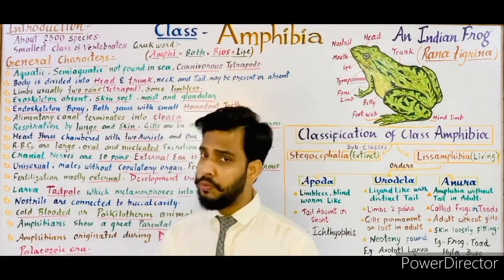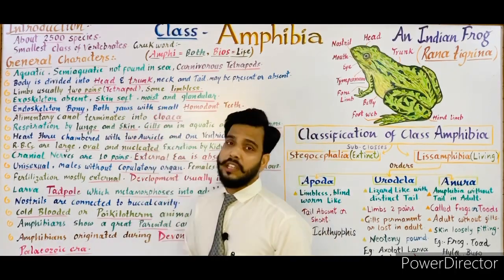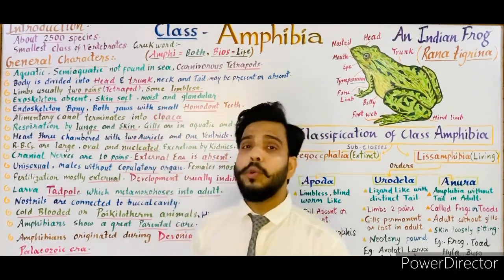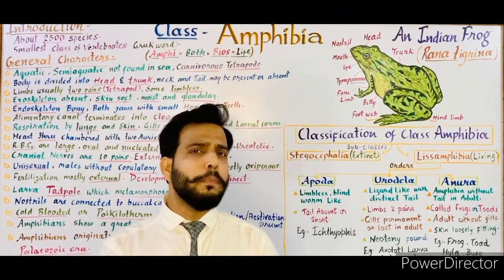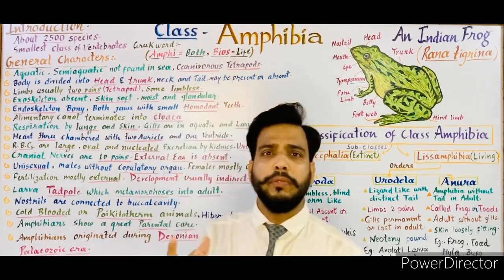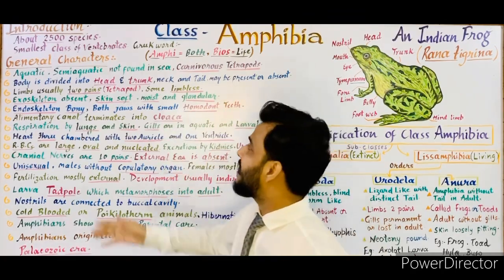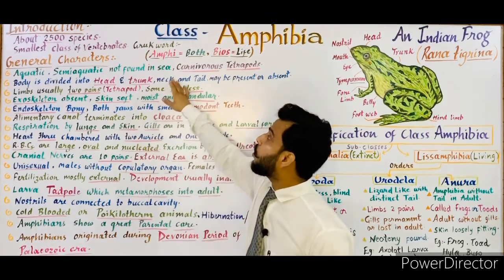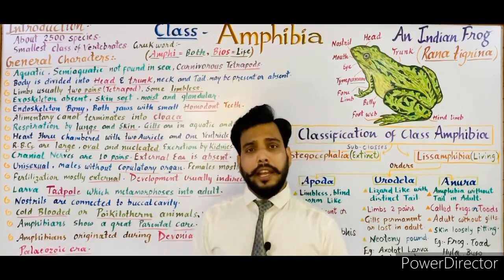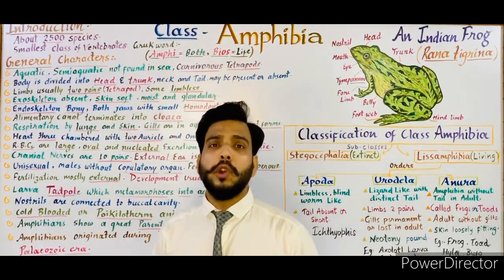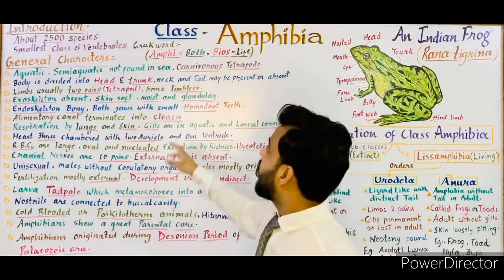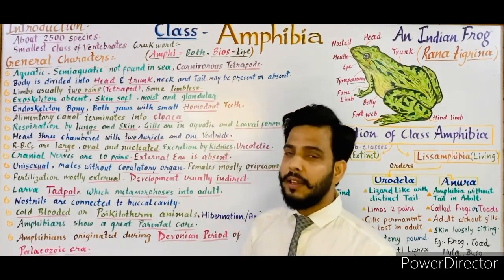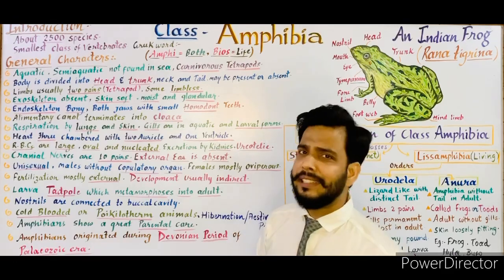The general characters of class Amphibia: they are aquatic or semi-aquatic, living where both water and land are available. They are not found in seawater — no amphibian is present in the sea. They are carnivores, meaning they are predators.